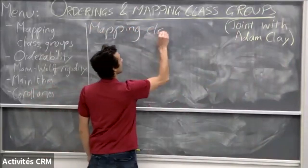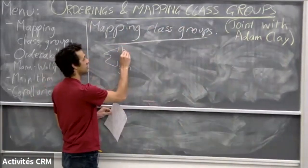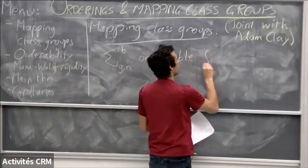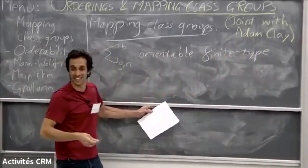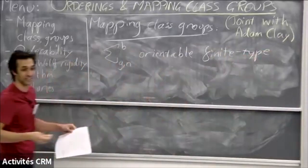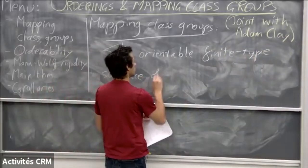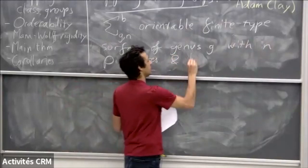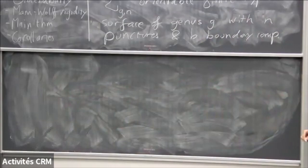They were briefly hinted at in Jonathan's talk. So first, here's sigma — I'm going to use this notation. This here is an orientable finite type surface. It's nice that we have to say this from one point of view, and it's really annoying when you're just talking about finite type surfaces and have to keep saying it. It's an orientable finite type surface of genus g with n punctures and b boundary components. The superscript is the boundary components, subscript is the punctures.